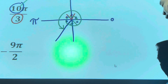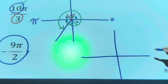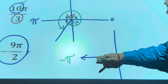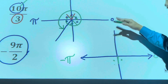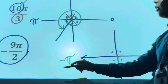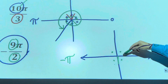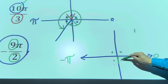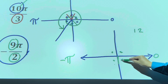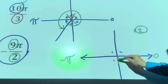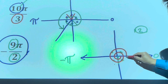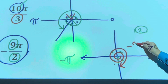Next is negative 9 pi over 2. Since it's negative, go clockwise. The denominator is 2, so divide each half circle into 2 equal parts. The numerator is 9, so count 9 parts going clockwise: 1 through 4 is one full rotation, 5 through 8 is another full rotation, then part 9 stops here. So the angle makes 2 full clockwise rotations and then stops — that's negative 9 pi over 2.